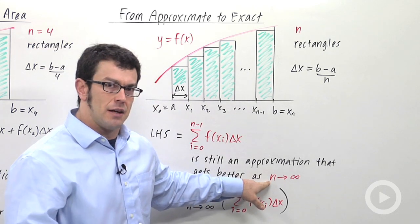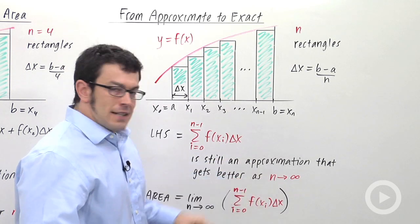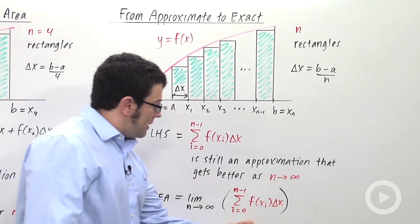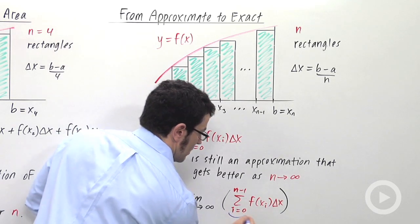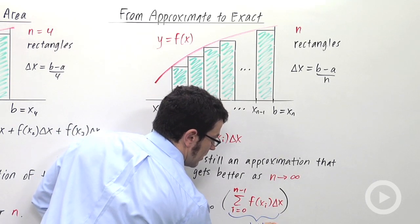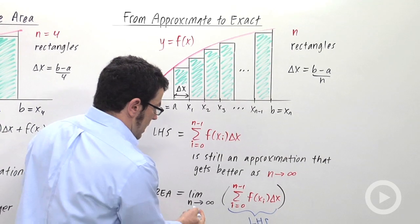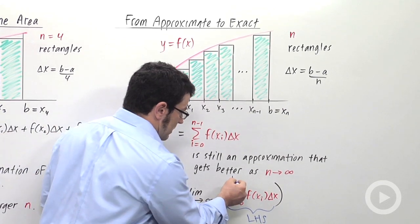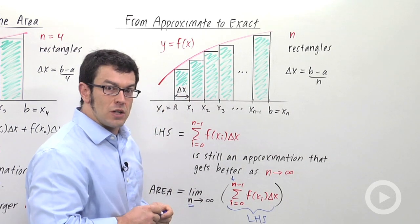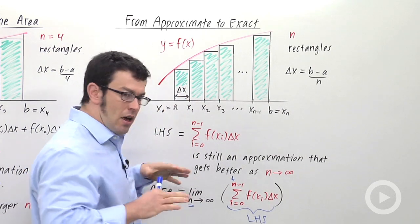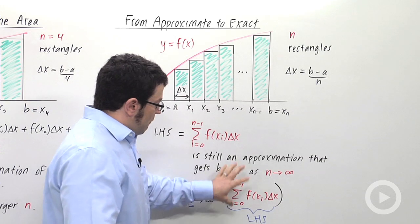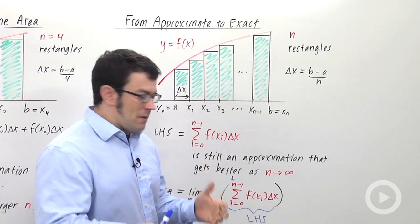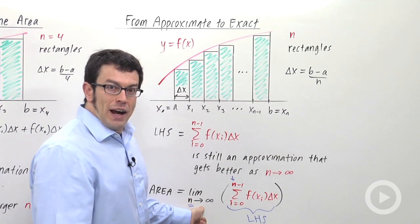And here's the idea. Here's where the calculus comes in. To get the exact area, we take the limit, as n approaches infinity, of this left-hand sum. Now notice, n, the number that we're taking to infinity, is this value. It also happens to correspond to the number of rectangles. So we're using more and more rectangles. And if the value of the left-hand sum gets closer and closer to some limit, then that will be the value of my area.